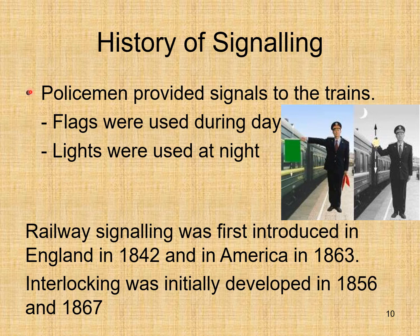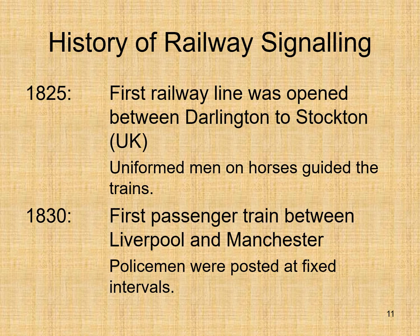Historically, policemen provided signals to trains using flags during the day and lights at night. Railway signaling was first introduced in England in 1842 and in America in 1863. Interlocking was initially developed in 1856 and 1867 respectively in England and America. In 1825, the first railway line was opened between Darlington and Stockton, UK, where men or horses guided the trains. In 1830, the first passenger train ran between Liverpool and Manchester, with policemen posted at fixed intervals.